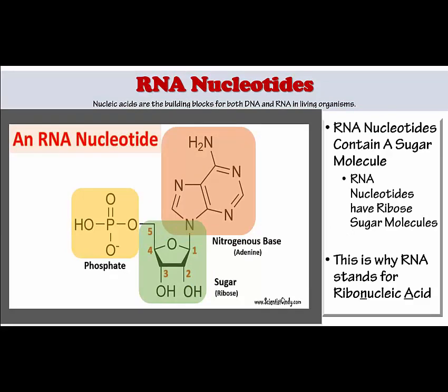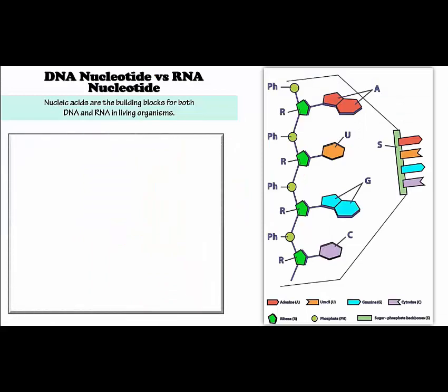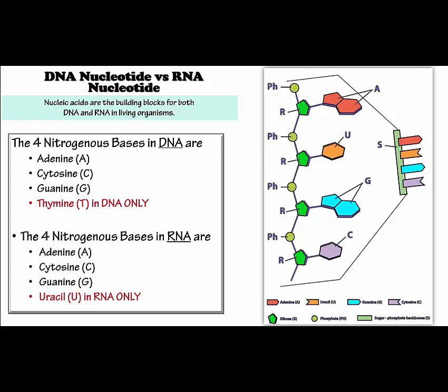RNA nucleotides also contain a sugar molecule — a ribose sugar molecule — which is why RNA stands for ribonucleic acid. RNA nucleotides contain one of four possible nitrogenous bases: adenine, guanine, cytosine, or uracil. Comparing DNA and RNA nucleotides side by side, the differences are the sugar molecule and the nitrogenous bases. In DNA, thymine is a possible nitrogenous base, whereas in RNA, thymine is replaced with uracil.